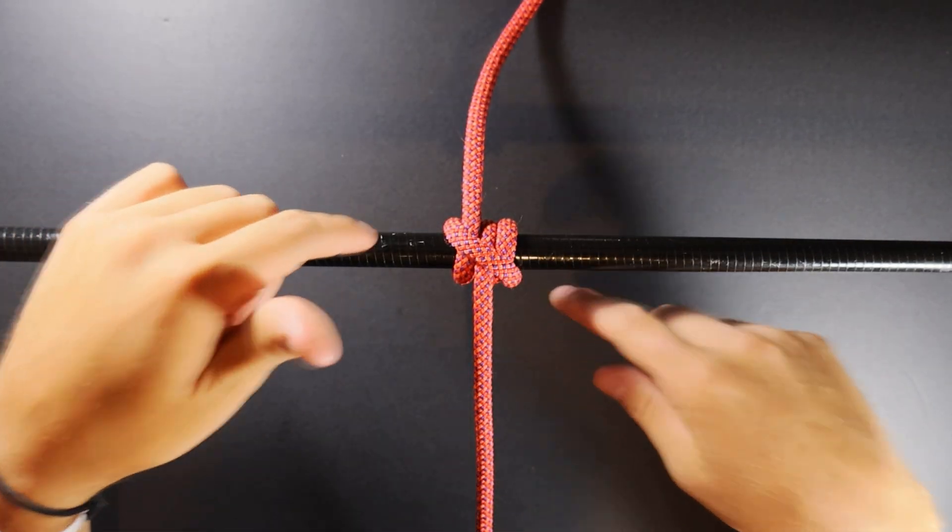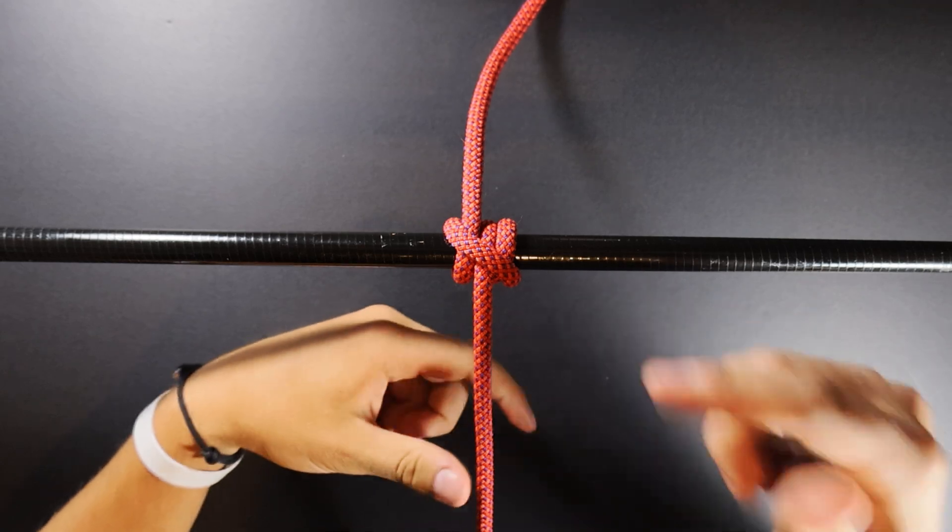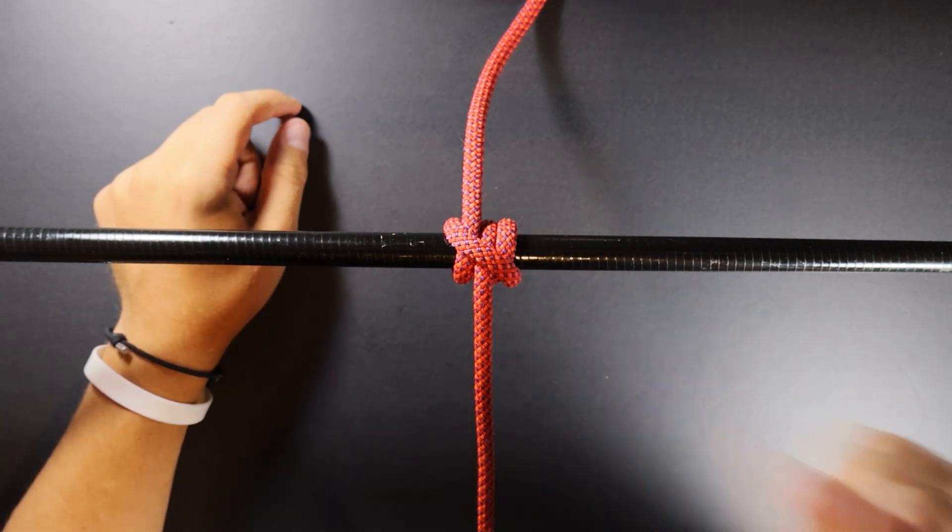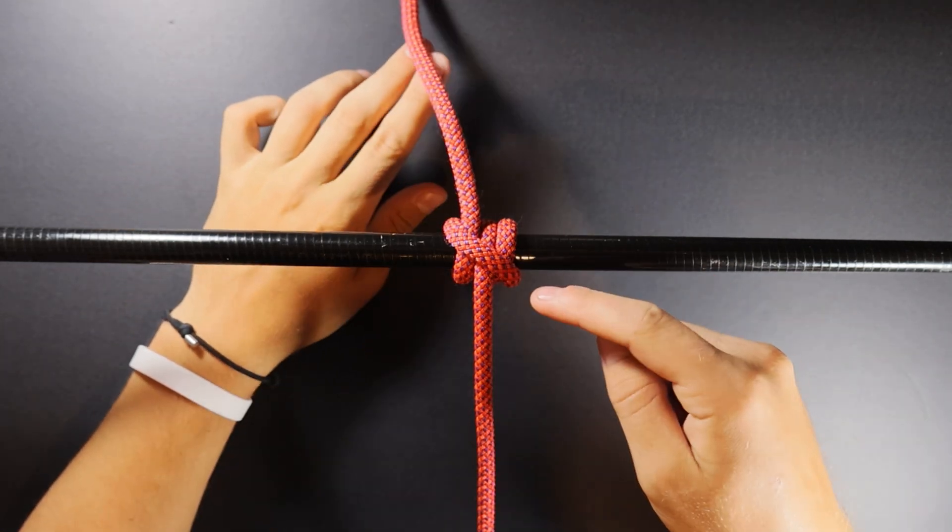What's up YouTube, Seth here from How To Knots for another tutorial in our Ashley's Book of Knots series. Today's knot needs no introduction, ABOK 61, it's the rolling hitch.